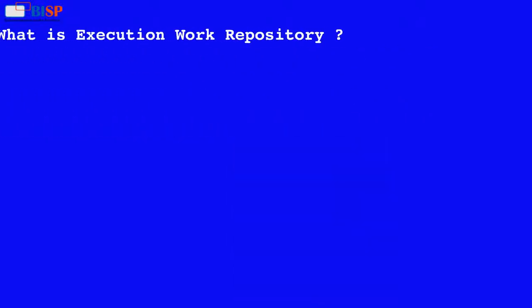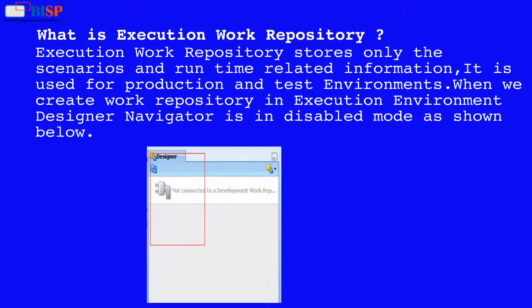What is execution work repository? The execution work repository stores only the scenarios and runtime related information. It is used for production and test environments. When we create a work repository in the execution environment, Designer Navigator is in disabled mode, as shown below.